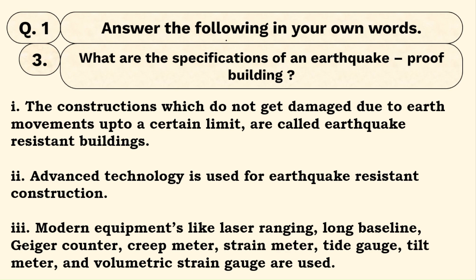Question number three: what are the specifications of an earthquake-proof building? We often hear about earthquake-proof buildings in Japan. It doesn't mean no earthquake can affect them at all. Up to a certain extent — say magnitude seven or eight — the building can withstand it. Without earthquake-proof construction, even a magnitude five or six could bring a building down.